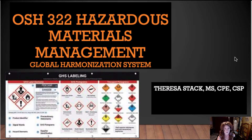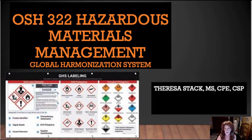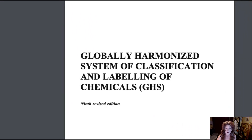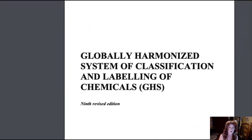The second identification system we're going to learn is the Global Harmonization System. It's one you're likely familiar with, however it does differ from the Department of Transportation. Everything you need to know is available in this document: the Global Harmonization System of Classification and Labeling of Chemicals. That title tells you the whole purpose — it has to do with communication, classification, and labeling.